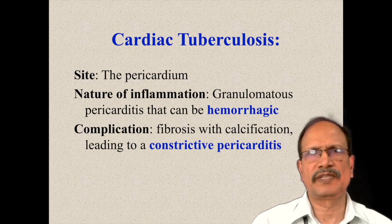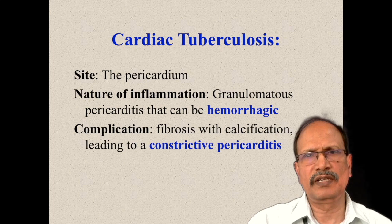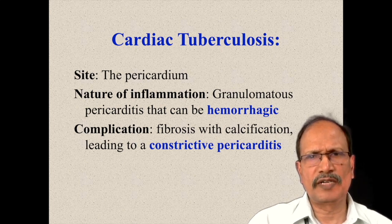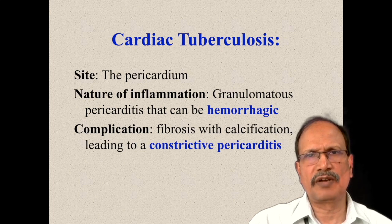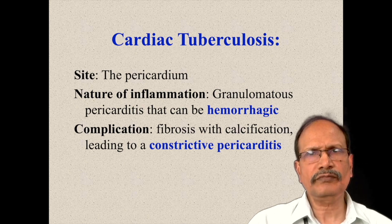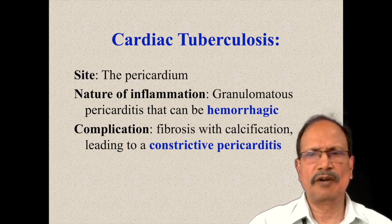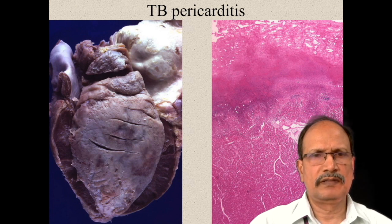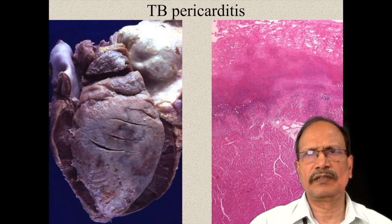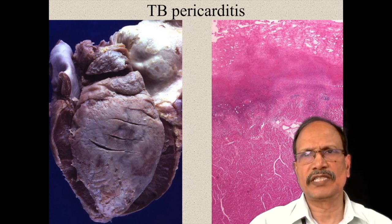Cardiac tuberculosis affects the pericardium and produces pericardial effusion. It is a granulomatous pericarditis and importantly it is a hemorrhagic variety of pericarditis. If there is any pericardial effusion and you aspirate blood, think of the possibility of tuberculosis, as this is very common in addition to other causes like malignancies or tumors. The complication of healed pericarditis caused by tuberculosis is constrictive pericarditis. You can see that the pericardial surface is grayish-white and under cross-section you can appreciate the presence of caseous material in the pericardial cavity.